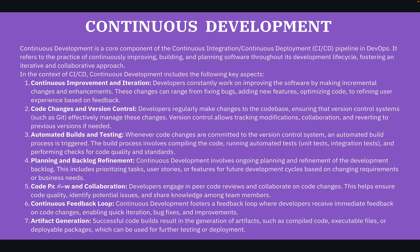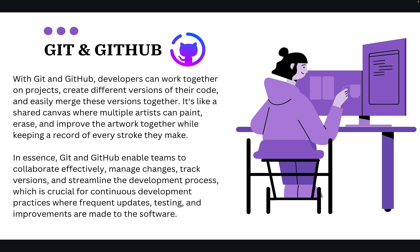Code can be written in any language — it is the decision of your organization or the development team. A single application can use multiple programming languages for multiple tasks; it is not required to use only one language. However, we need to maintain that code with the help of a version control system, which we will discuss in upcoming videos.